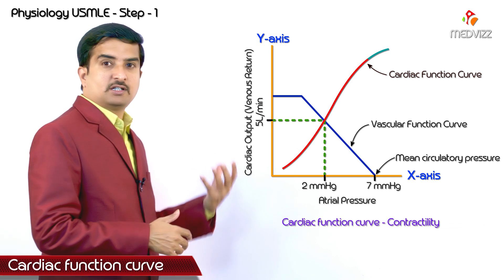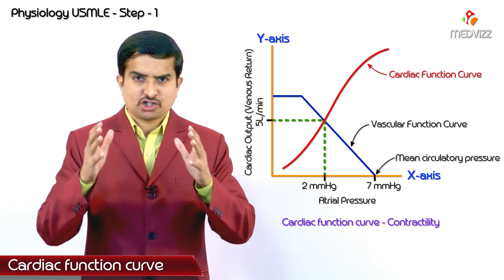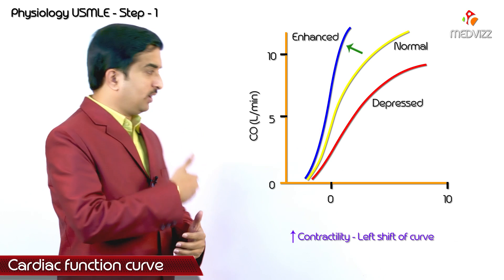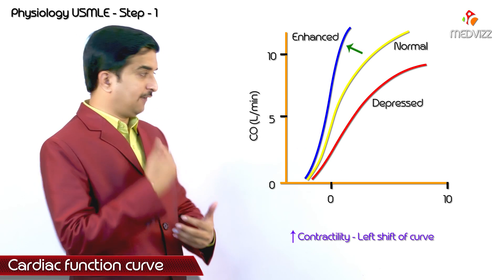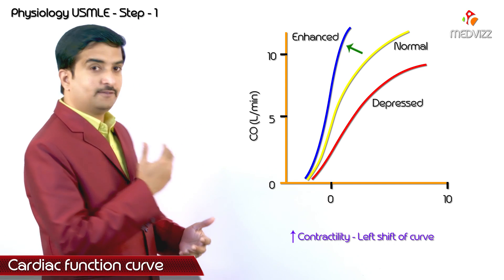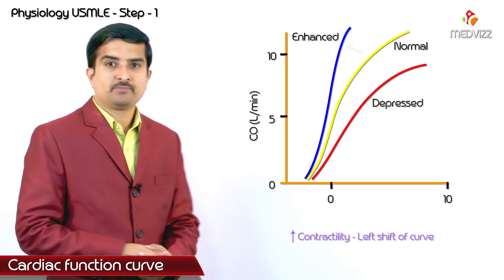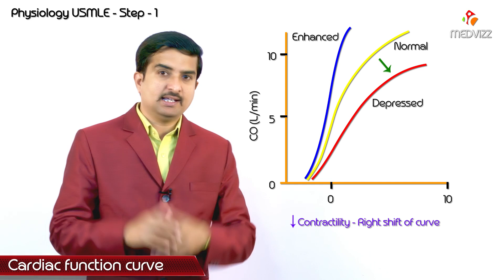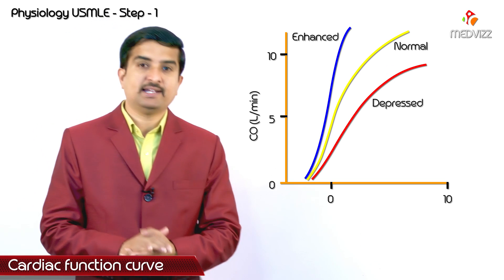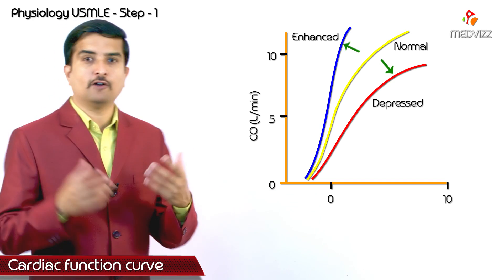The cardiac function curve represents contractility — a constant contractility defines the cardiac function curve. Whenever there is increased contractility, especially of the left ventricle, that equals a left shift of the curve with a steeper slope. Whenever there is decreased contractility, that equals a right shift of the curve with a flatter slope. This is how you identify cardiac function by the left or right shift of the graph.